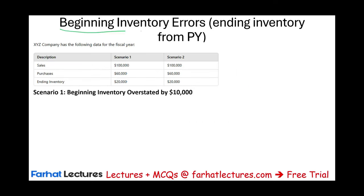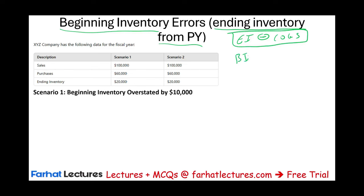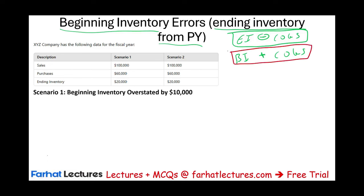Now let's look at beginning inventory errors. Ending inventory becomes the beginning inventory for the following year, so it's important to understand this relationship. Ending inventory and cost of goods sold have a negative relationship. But beginning inventory and cost of goods sold have a positive relationship — they work in the same direction. If beginning inventory is overstated, cost of goods sold is overstated. If beginning inventory is understated, cost of goods sold is understated.